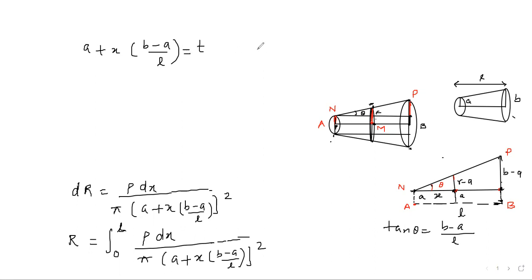Let we write a plus x times b minus a upon l equal to t. Differentiating, b minus a upon l dx equal to dt. Our concern is to get dx, so dx equals l upon b minus a times dt. We can also change the limits. When x equals 0, then t will be equal to a. When x equals l, then t equals b.